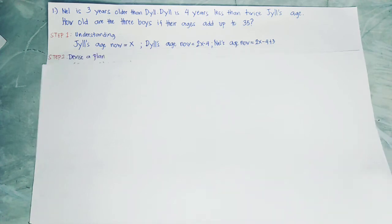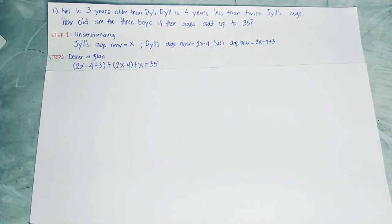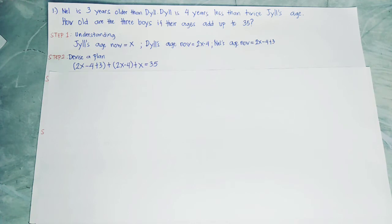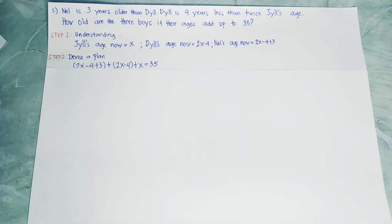Step 2 is devise a plan. The plan goes like this: (2x minus 4 plus 3) plus (2x minus 4) plus x equals 35, because the question asks how old are the 3 boys if their ages add up to 35. So we have to equate to 35.